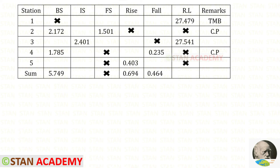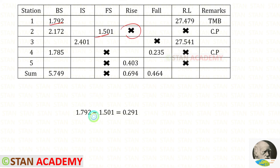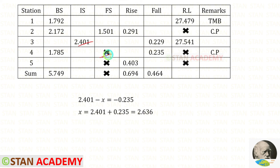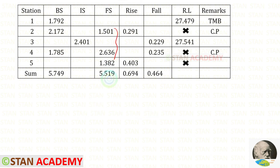Now let us see one more problem. In this problem also, we need to find the missing values. First, let us find this missing value — when we add these three, we should get 5.749. Using that concept, we can find x. This minus this, we will get this fall. This minus this should be minus 0.235 because it is fall — using that concept we can find x. This minus this, we will get positive 0.403 because it is rise. Using that concept, we can find x. When we add these three, we will get this.